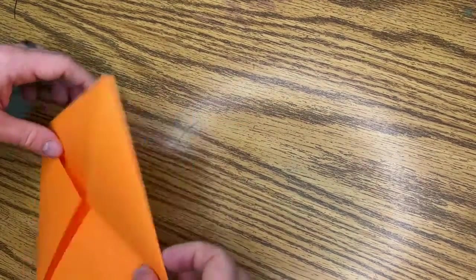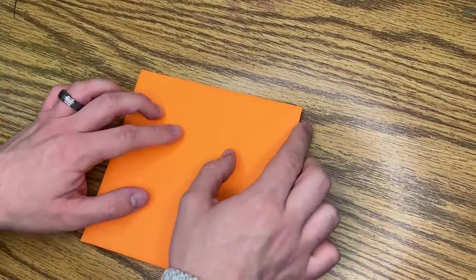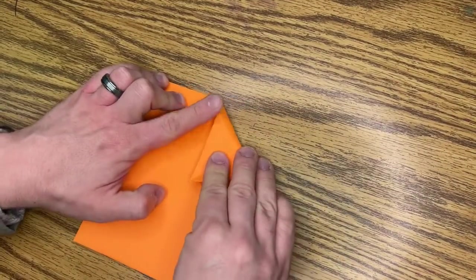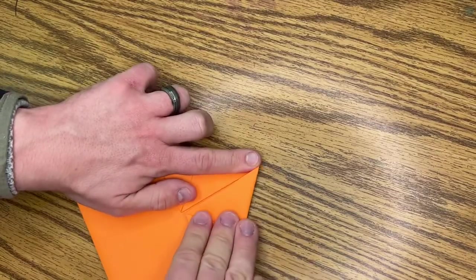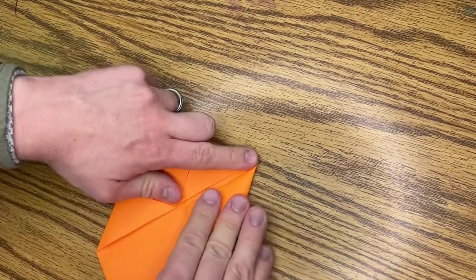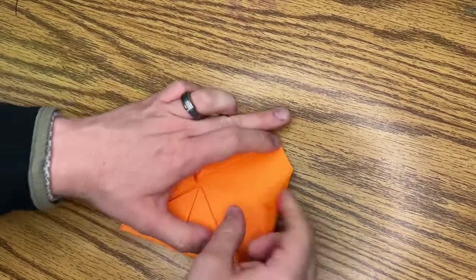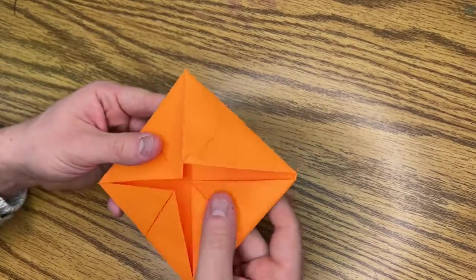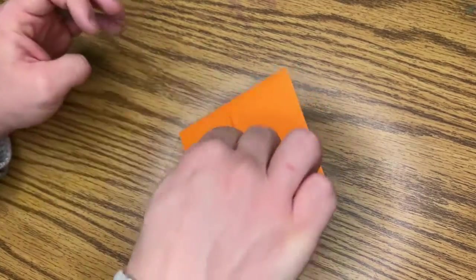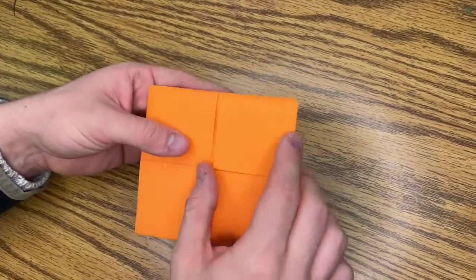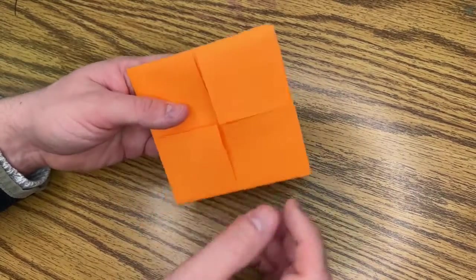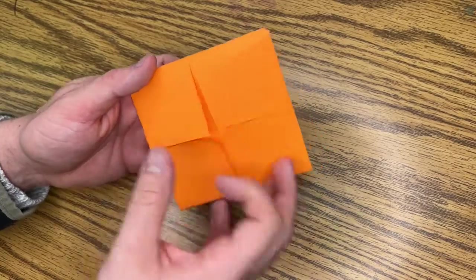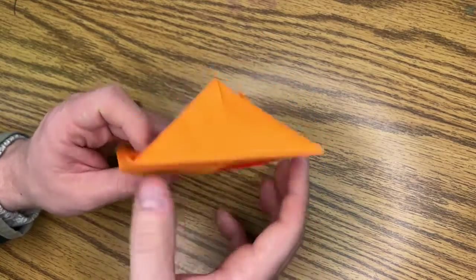Then you turn it over, and you do the same thing on the other side. So I'm taking those corners and folding them into the middle. Okay, so once it looks like this, it kind of reminds me of like a trampoline or something. It has these little slots, these little pockets here. This is where your fingers are going to go, but right now my fingers can't fit in there. It's not folded enough.